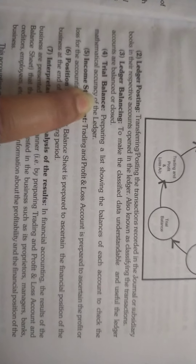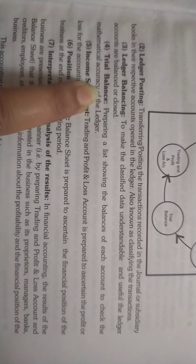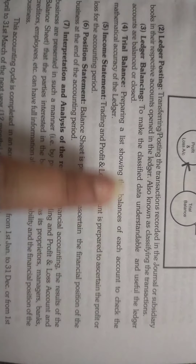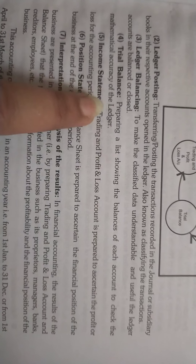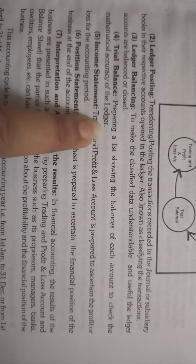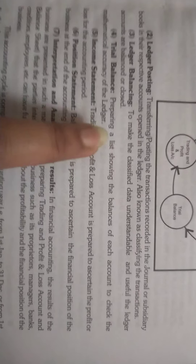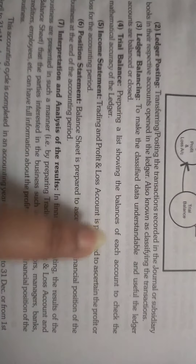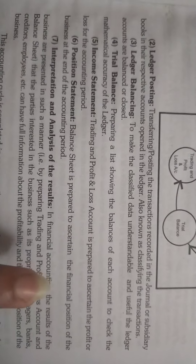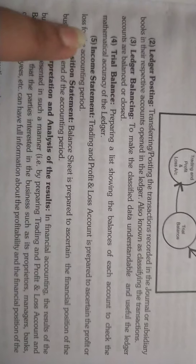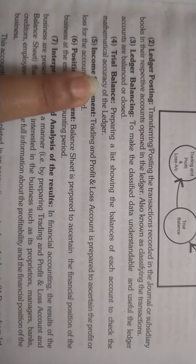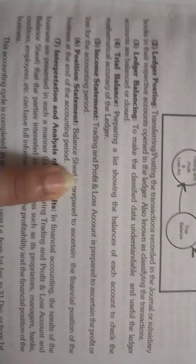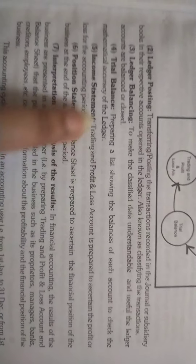Then we will make the trial balance. We prepare a list showing the balance of each account to check the mathematical accuracy of the ledger. We check all the accounts to verify the mathematical accuracy of what we have posted in the ledger.